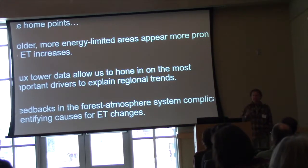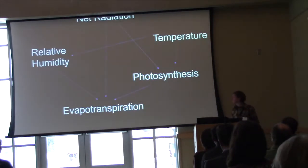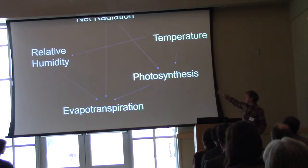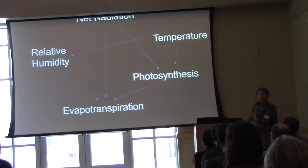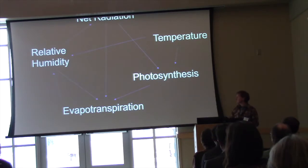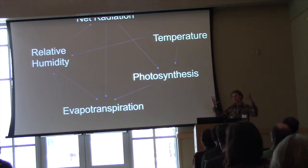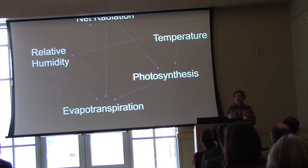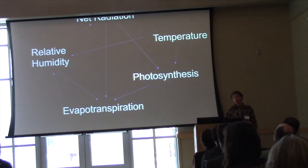Finally, it's not straightforward to study these trends because there are feedbacks in the system. If we draw the arrows — photosynthesis, relative humidity, and net radiation with temperature as a secondary driver — a change in evapotranspiration impacts relative humidity, and more water vapor in the atmosphere impacts net radiation, which evapotranspiration is super sensitive to. So it's not straightforward as to what we're going to expect or how to predict these changes in evapotranspiration.